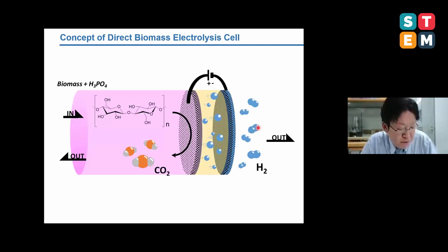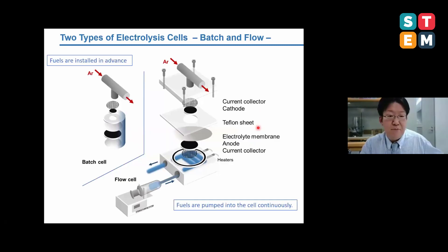This picture represents the concept of this research. Biomass materials were dissolved in phosphoric acid, and the solution was introduced to the electrochemical cell. When voltage was applied to this cell by using power source, the protons migrate through the electrolyte, and hydrogens are produced from the other electrode. To demonstrate this concept, we designed these two electrochemical cells. The first one is batch cell, and the other is flow-type cell.